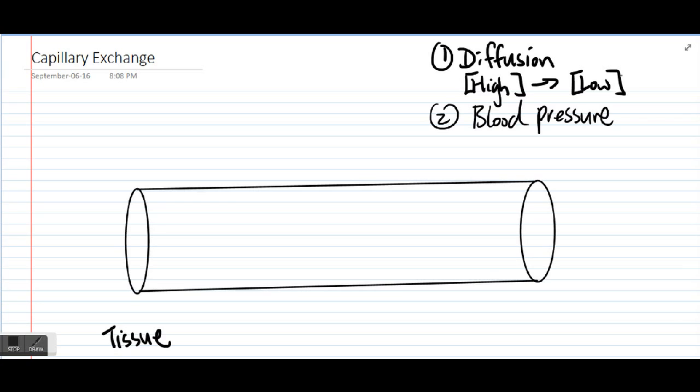So if this piece of blood vessel here represents a capillary, we can say that this is the arterial side, which means it's connected to an arteriole and then previously to an artery. And on this side is what we call the venous side. So it's going to be connected to a venule and then to a vein. Based on your understanding of blood pressure, you will know that the pressure here is going to be higher than the venous side.